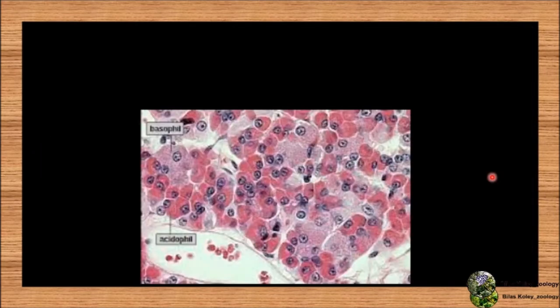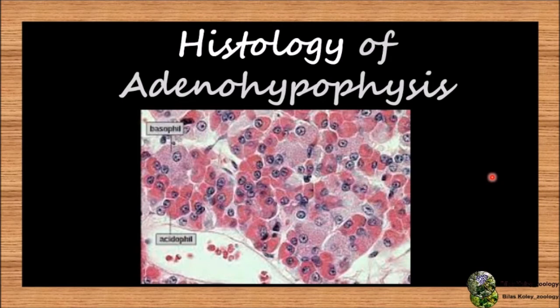Now we will discuss the histology. Histologically, adenohypophysis is formed of five types of endocrine cells which secrete seven types of hormones. There are somatotrophs, which are 30 to 40% and secrete STH or growth hormone. Corticotrophs, which are about 20% and secrete ACTH. Thyrotrophs, which secrete TSH, that is thyroid stimulating hormone. There are gonadotrophs, which secrete FSH, LH, and ICSH. And lactotrophs, which secrete prolactin.